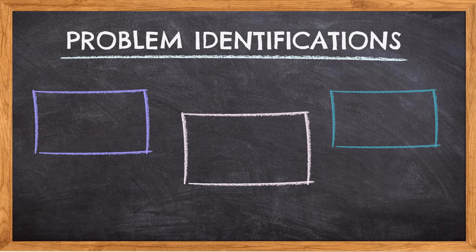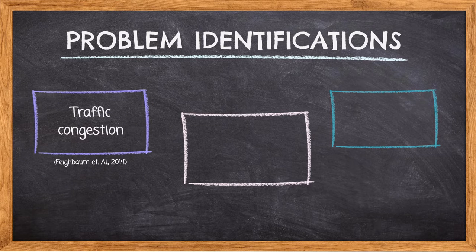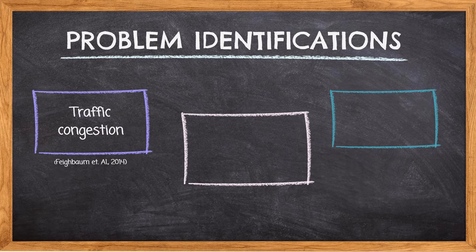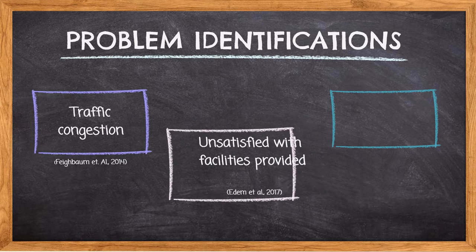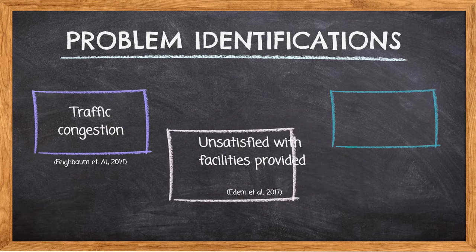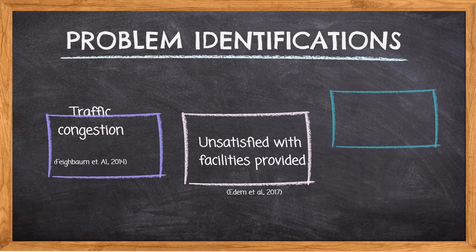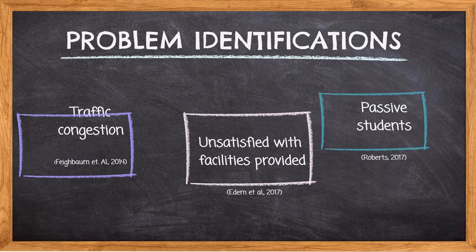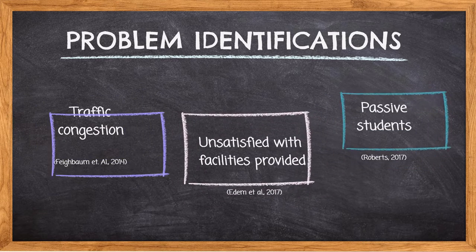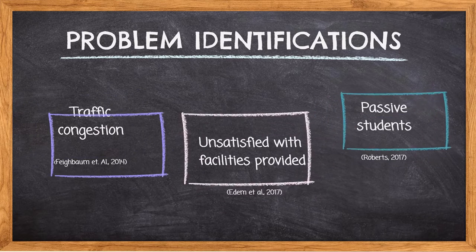Problem Identification. First is Traffic Congestion. Some lecturers face these problems because the distance between their home and campus is far away and they will face traffic congestion. Second, Unsatisfied with facilities provided. Some facilities may have not been upgraded to the latest version. Thus, some difficulties may arise as facilities such as computers do not work well. Third, Passive Students. Each lecturer will face these issues as students are not responsive and quiet during the lecture either in physical class or online class.